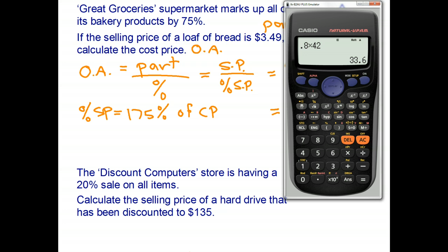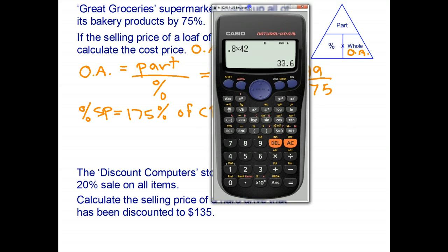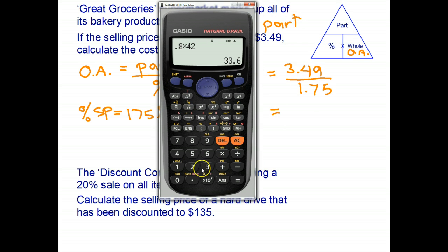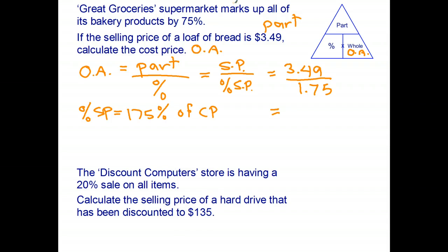Let's go ahead and do that on the calculator. Pull it off to the side. 3.49 divided by 1.75, and it looks like we get something pretty close to about $2. So let's go ahead and just say it looks like the original amount was $2.